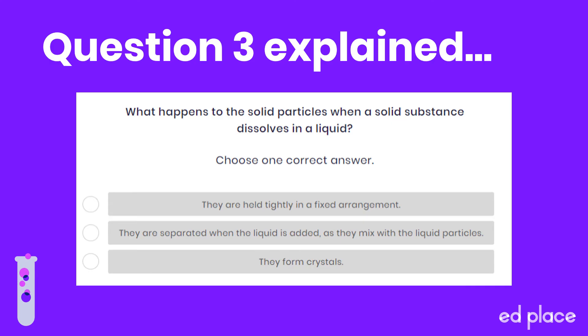Let's take a look at some of the questions you've just completed. Question three asks: what happens to the solid particles when a solid substance dissolves in a liquid? You have to choose one correct answer. We know from our lesson that when a solid dissolves, it breaks up completely and mixes in with a solvent — here it's a liquid. Crystals are not formed, and the particles are not held tightly in a fixed arrangement. So the correct answer is: they are separated when the liquid is added as they mix with the liquid particles. Well done if you got that correct.